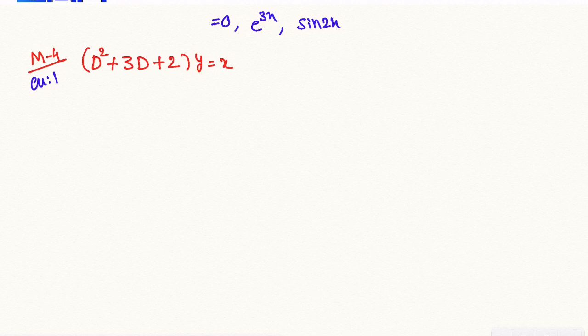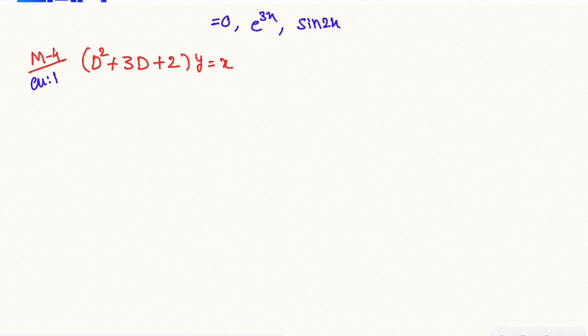Let's show the first example. We will show the first model of the equation. So m² + 3m + 2 is equal to 0.